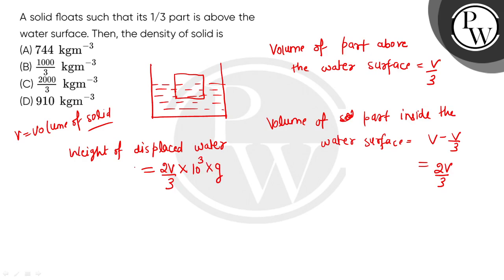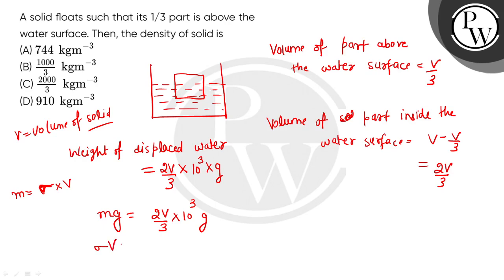The weight of the displaced water equals the weight of the body. The weight of the body equals mass times acceleration due to gravity. The mass of the body equals density of the body times its volume.